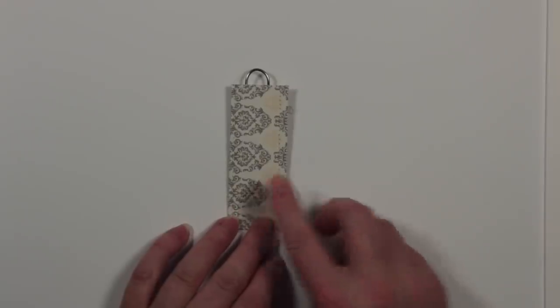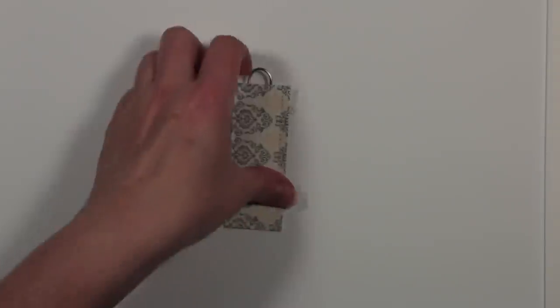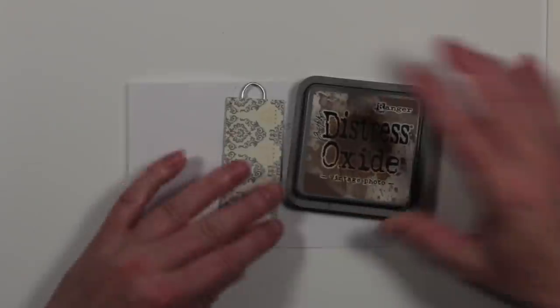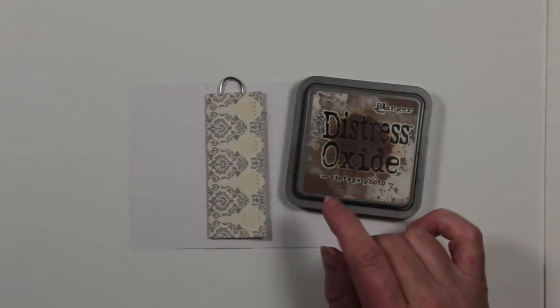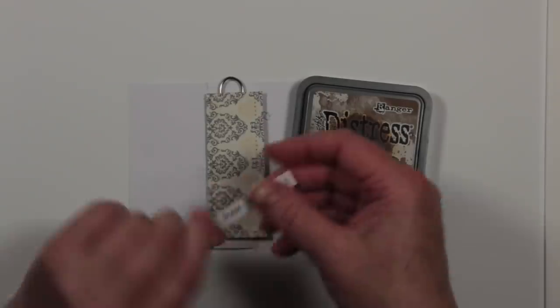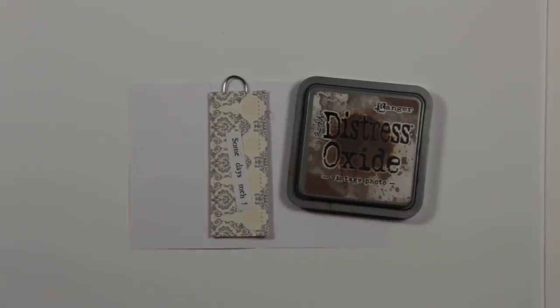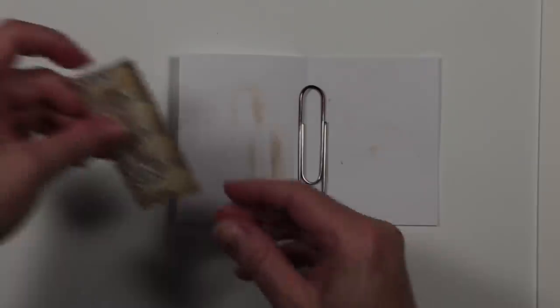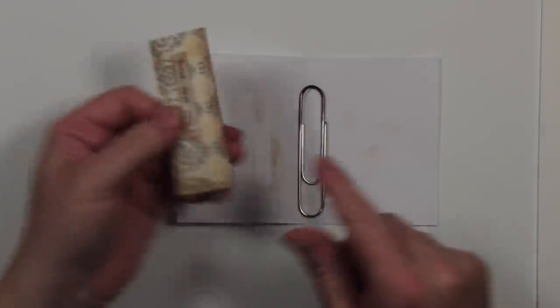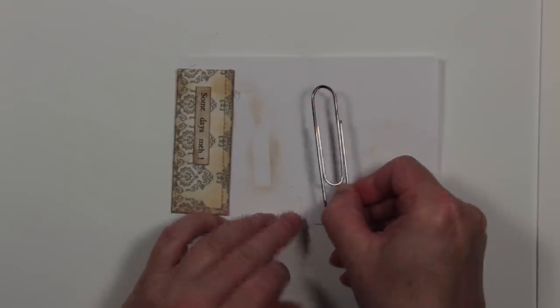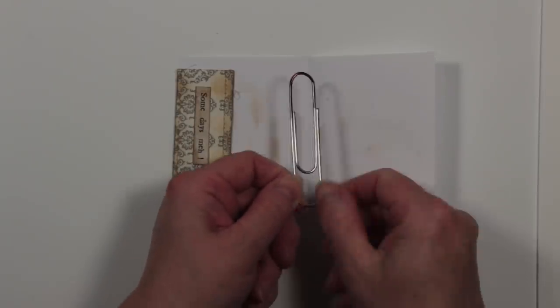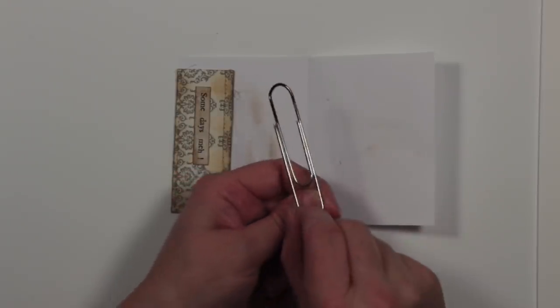So that's that done. I'm going to add some of the distress oxide around the outside edge again, as I did in the earlier one, and I'm also going to add one of the little phrases, so I'll colour that up in the same way. This is my pocket, all inked up, and I hope you can see on camera that I've coloured the top of the loop of my paperclip.